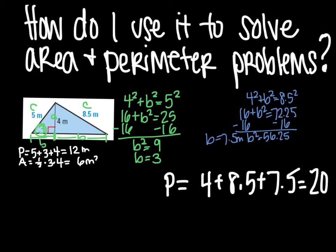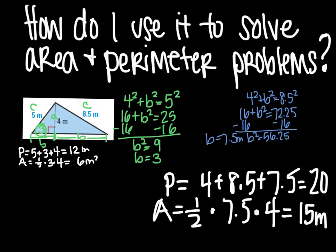And then our area would be one half. Our base which was 7 and a half times our height which is 4, which means the area would be 15 meters squared.